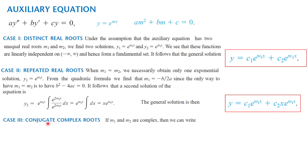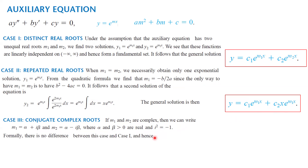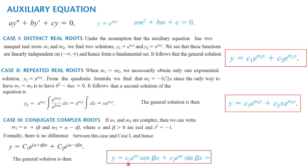Finally, Case 3: when m₁ and m₂ are complex conjugates, we write m₁ = α + iβ and m₂ = α − iβ, where α and β are real numbers and i² = −1. This is similar to Case 1, and using Euler's formula, the solution simplifies to y = c₁e^(αx)cos(βx) + c₂e^(αx)sin(βx), or equivalently e^(αx)[c₁cos(βx) + c₂sin(βx)].